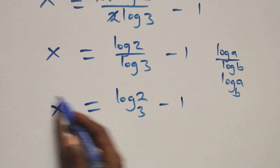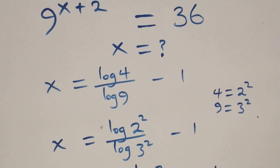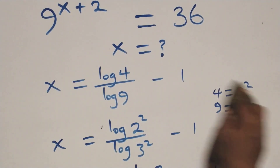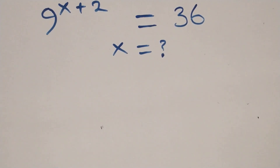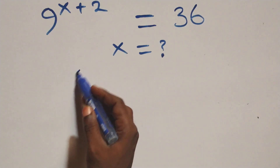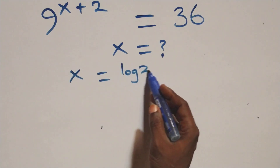So we have the value of x in this problem as log 2 base 3 minus 1. Let's check whether this value of x satisfies the given problem, where x equals log 2 base 3 minus 1.